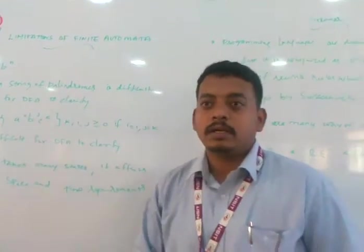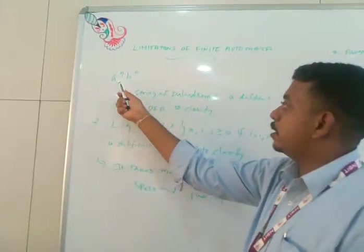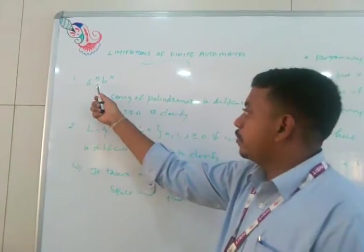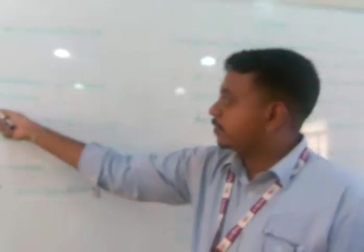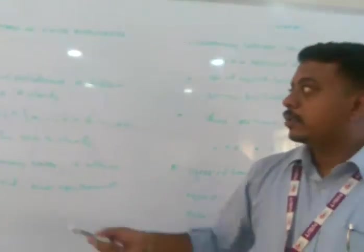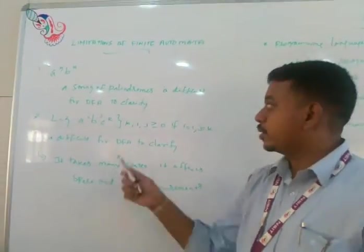This is the string a^n b^n. This string is difficult for DFA to classify. For a^n b^n it is difficult to draw automata because it takes many states and it affects space and time complexity.